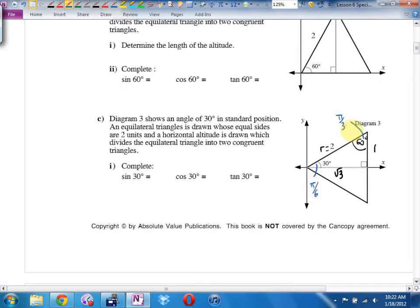You see, now I can tell you, as an exact value, what is the sine of 30. Here's 30. What's opposite over hypotenuse? What's the cosine of 30 adjacent over hypotenuse? Root 3 over 2. And what's the tangent of 30 opposite over adjacent? 1 over root 3.